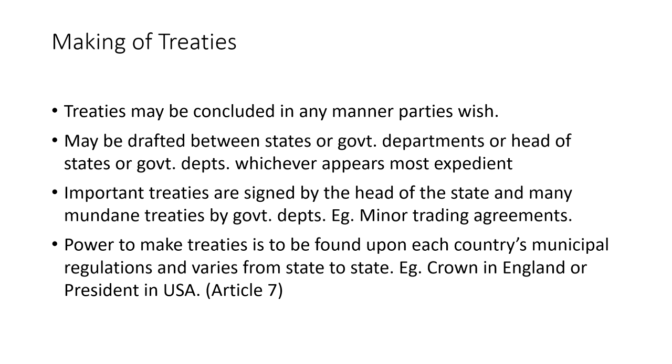Power to make treaties is found in each country's municipal regulations and varies from state to state. In England it is the Crown; in USA it is the President; in India, being a dualist state, any treaty of a public nature is to be ratified by Parliament. Once a treaty draft is finalized, consent is to be obtained from states so they can accept the obligations and rights mentioned in the treaty. There are largely four to five methods through which consent can be obtained.